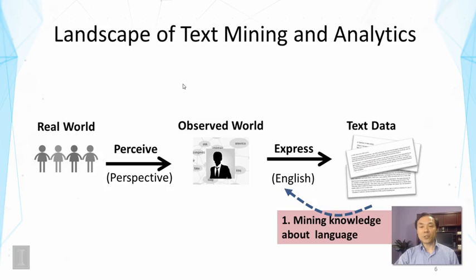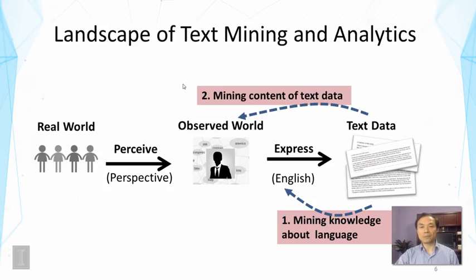Looking at the picture, we can also mine knowledge about the observed world. This has much to do with mining the content of text data — looking at what the text data are about and extracting high-quality information about a particular aspect of the world that we are interested in. For example, everything that has been said about a particular person or entity. This can be regarded as mining content to describe the observed world.